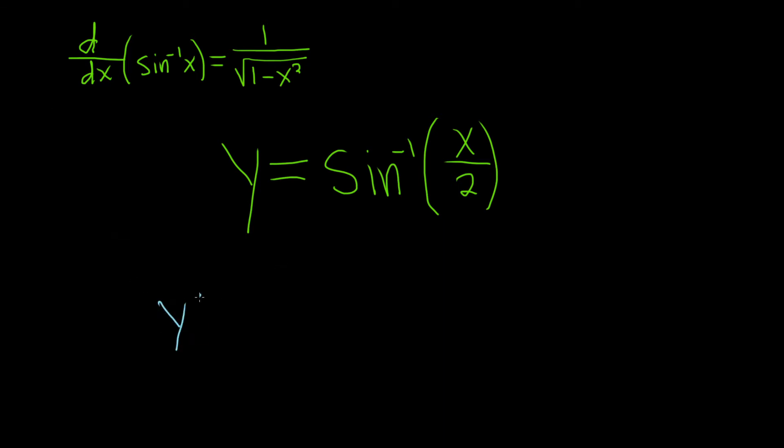So y prime is equal to 1 over the square root of 1 minus x over 2 squared. Now we have to multiply by the derivative of the inside function, which is x over 2.